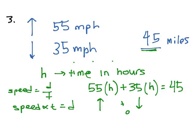So adding these together, we get 90H is equal to 45. H is equal to 0.5 hours. Ta-da! See you next time.